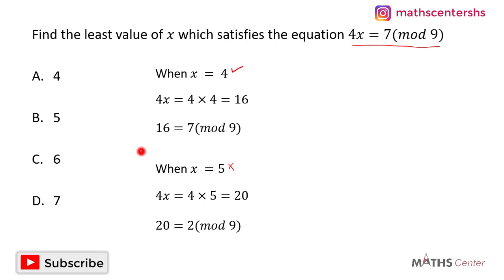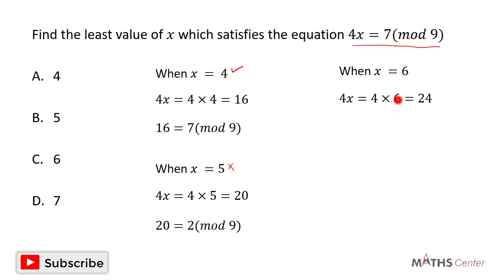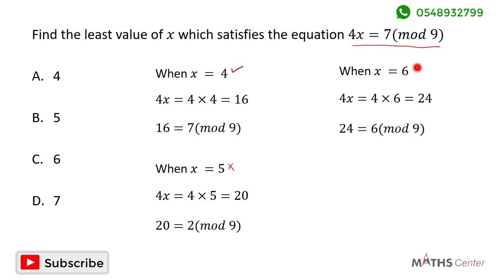The next option is when x is equal to 6. When x is equal to 6, 4x will give us 4 times 6, which is 24. The value of 24 in mod 9 is 6. So when x is equal to 6, the equation will not be satisfied.